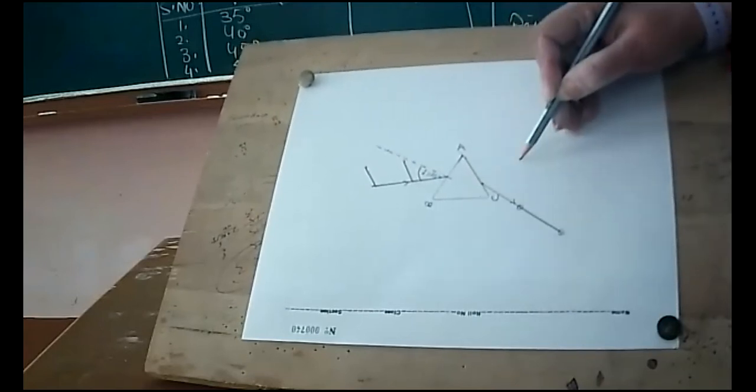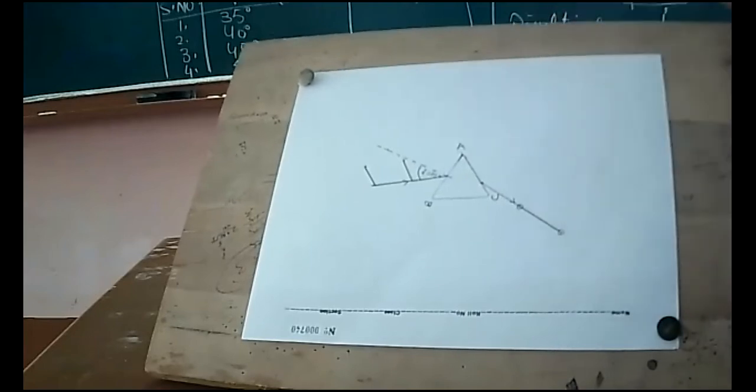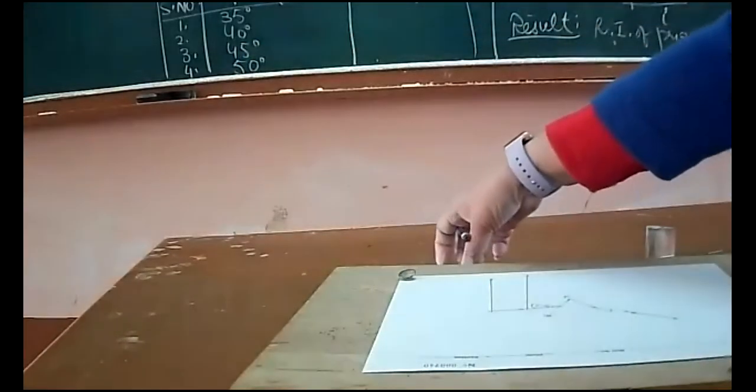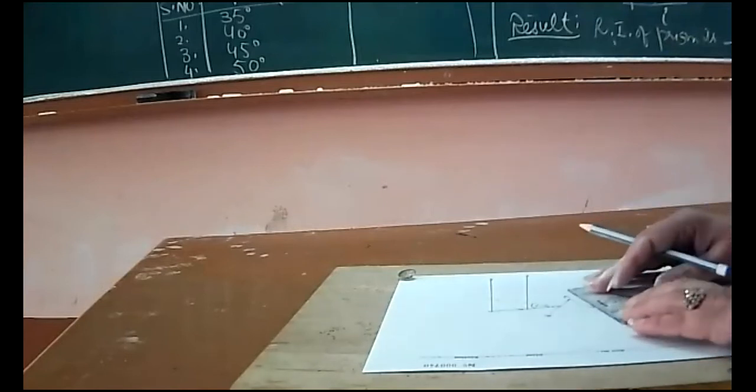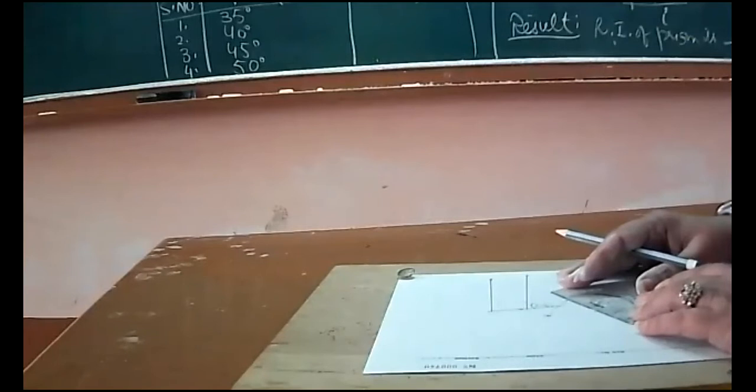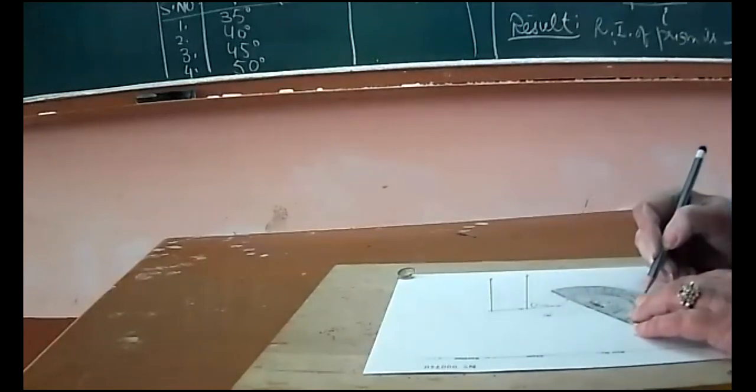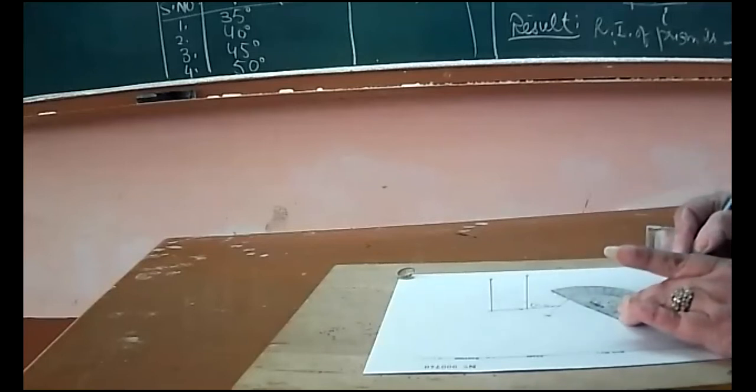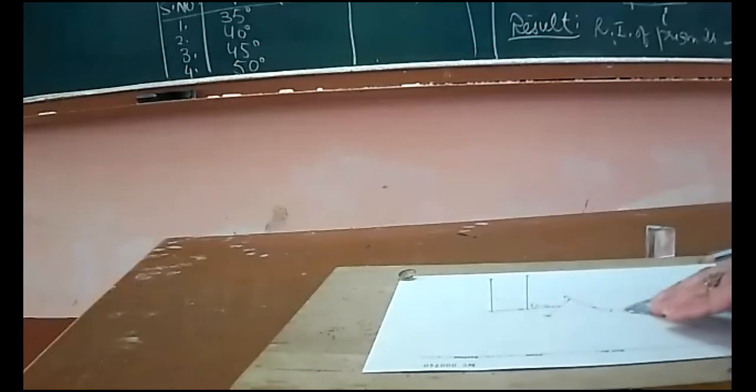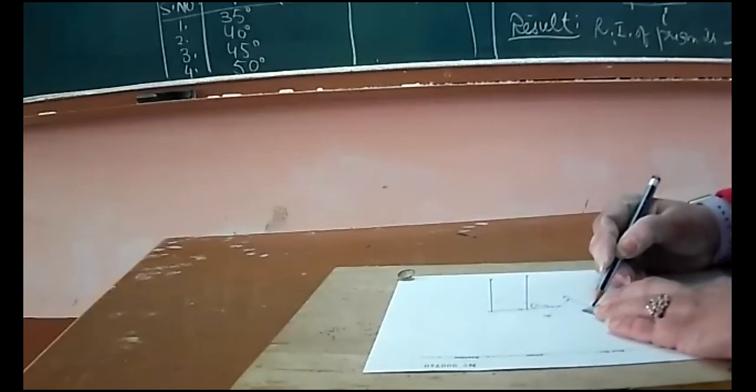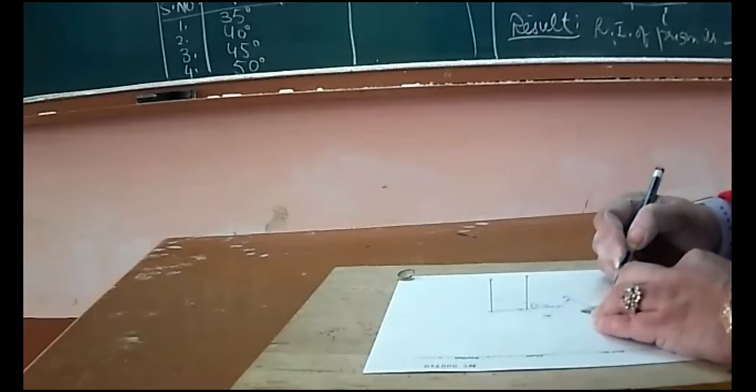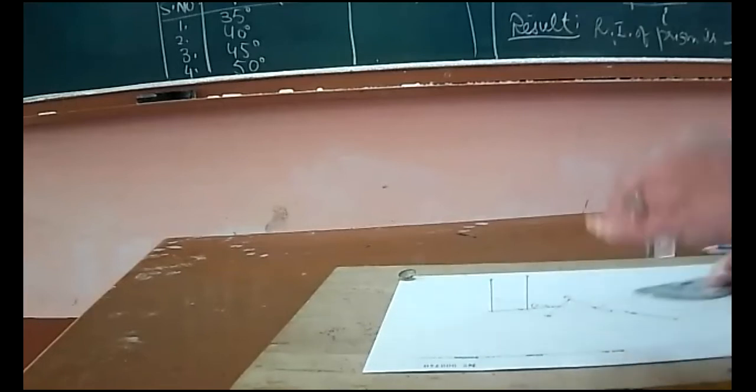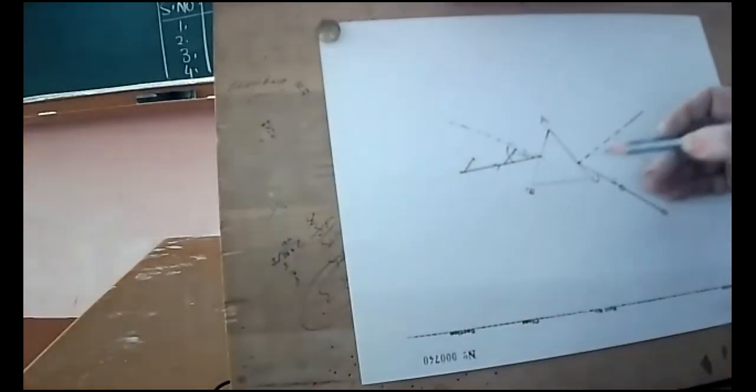I will keep the protractor here and draw normal here, then measure this angle of emergence. The angle of emergence is 10, 20, 30, 40, 50, 60, 65 degrees exactly. So I have drawn the normal and this is E, 65 degrees.